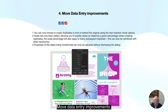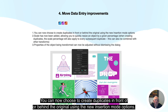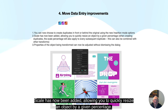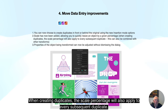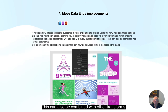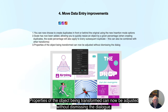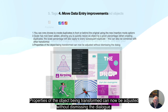Move data entry improvements: you can now choose to create duplicates in front of or behind the original using the new insertion mode options. Scale has now been added, allowing you to quickly resize an object by a given percentage. When creating duplicates, the scale percentage will also apply to every subsequent duplicate, and this can be combined with other transforms. Properties of the object being transformed can now be adjusted without dismissing the dialogue.